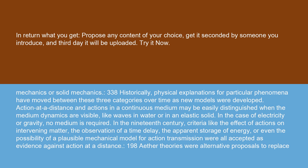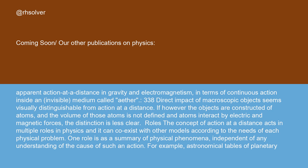Aether theories were alternative proposals to replace apparent action at a distance in gravity and electromagnetism in terms of continuous action inside an invisible medium called aether. Direct impact of macroscopic objects seems visually distinguishable from action at a distance. However, if the objects are constructed of atoms, and the volume of those atoms is not defined and atoms interact by electric and magnetic forces, the distinction is less clear.